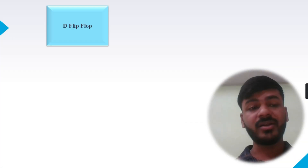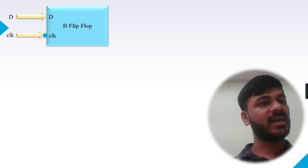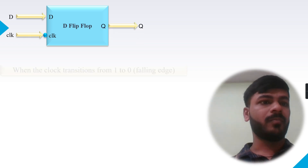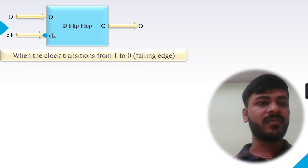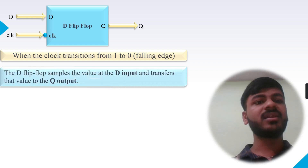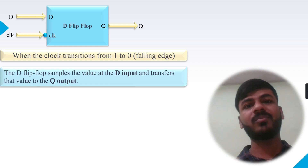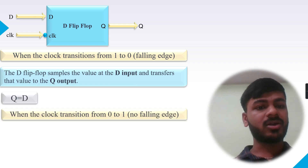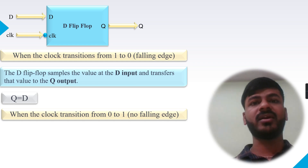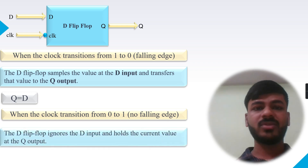Now let's discuss the negative edge triggered D flip-flop. It is the reverse of the positive edge triggered D flip-flop. It has the same inputs — D and clock — and the output Q, but the functionality changes. When the clock transitions from one to zero, that is the falling edge, the D flip-flop samples the value at the D input and transfers it to the output Q. When the clock transitions from zero to one, that is the rising edge, the D flip-flop ignores the input and holds the current value of Q.